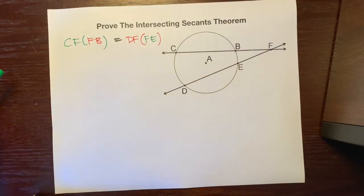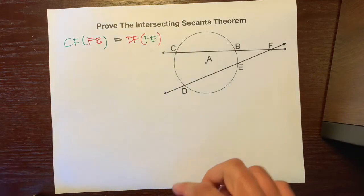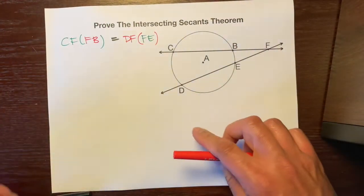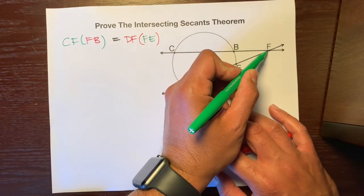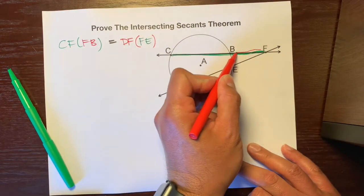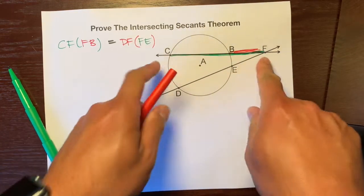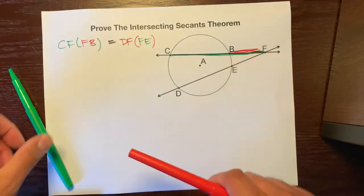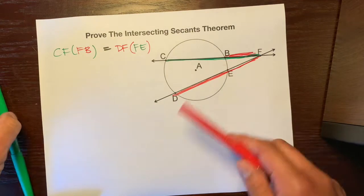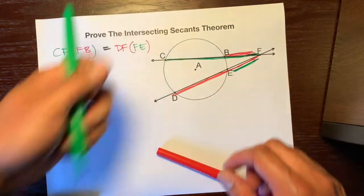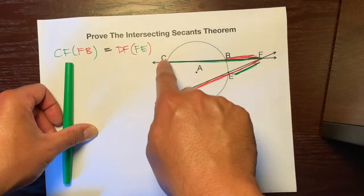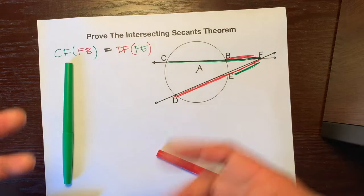If you look closely, the intersecting secants theorem says that CF — and if you want to take out two colored pens this may help — CF times FB, that entire piece times the outside piece on the same secant, is equal to DF times FE, the entire piece times the piece outside on the other secant. So the outside times the entire thing equals the outside times the entire thing.